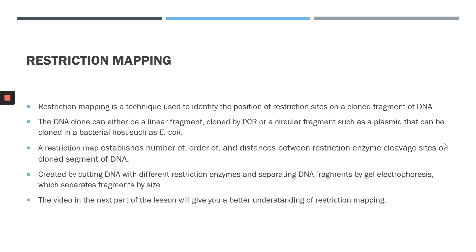Restriction enzymes can also be used in a process called restriction mapping. Restriction mapping is a technique used to identify the position of restriction sites on a cloned fragment of DNA. The clone can either be a linear fragment cloned by PCR, or a circular fragment such as a plasmid cloned in a bacterial host such as E. coli. A restriction map can establish the number of, the order of, and the distances between restriction enzyme cleavage sites on a cloned segment of DNA. The restriction map is created by cutting the DNA with different restriction enzymes and resolving the fragments on an agarose gel, which separates fragments by size. A video will be posted to give a better idea of how restriction mapping works.